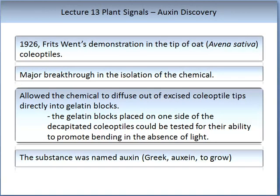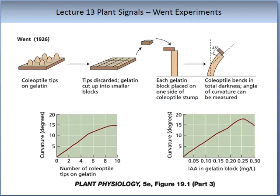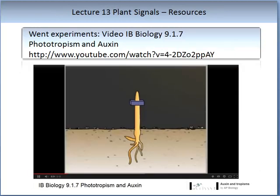Experiments conducted by Fritz Wentz in 1926 on the tips of oat coleoptiles went some way towards the discovery of auxin. He enabled a major breakthrough by allowing the chemical to diffuse out of excised coleoptile tips into gelatin blocks. The gelatin blocks were placed on one side of decapitated coleoptiles and tested for their ability to promote bending in the absence of light. This substance we now know as auxin. The slide shows a summary of Wentz's experiments, results, and conclusions. Please watch the following video on Wentz's experiments called 'Phototropism and Auxin.'